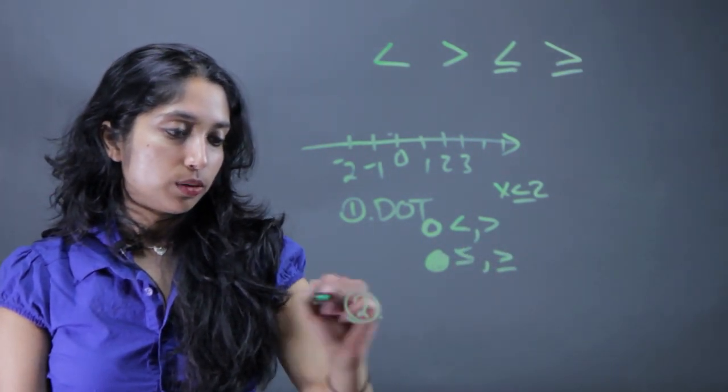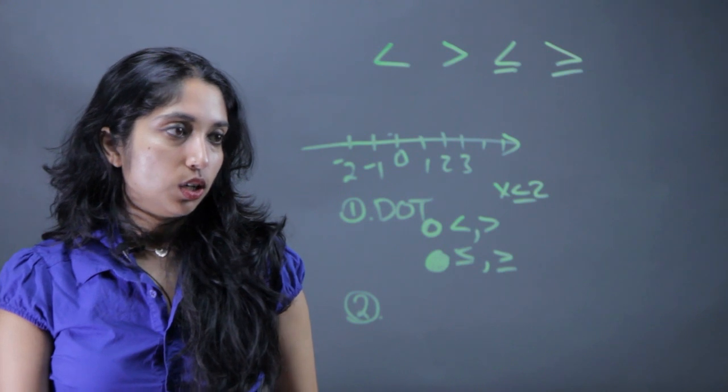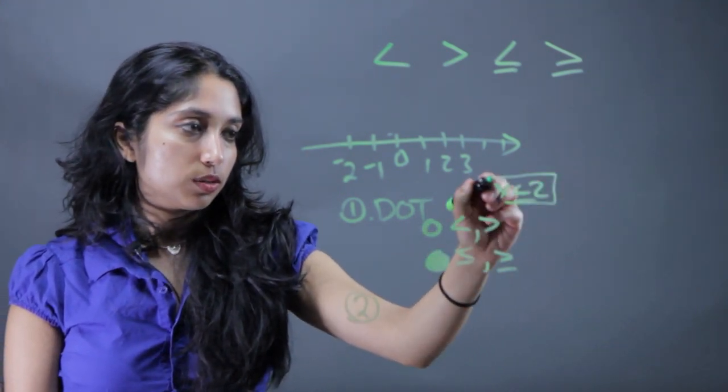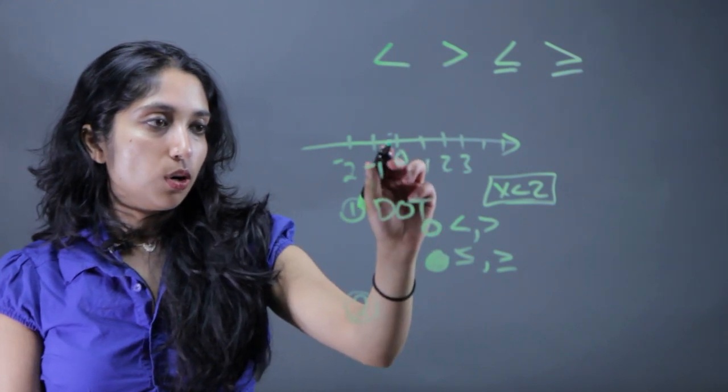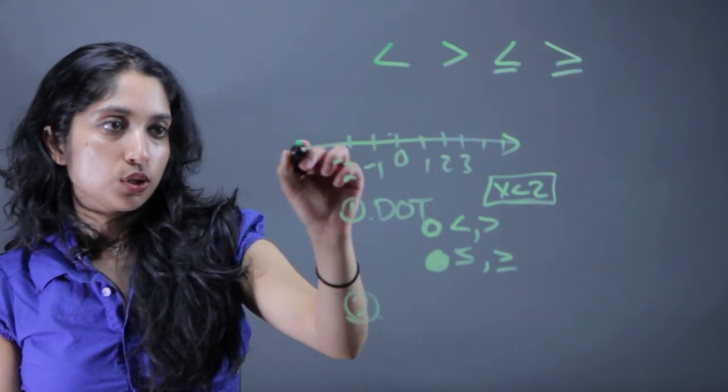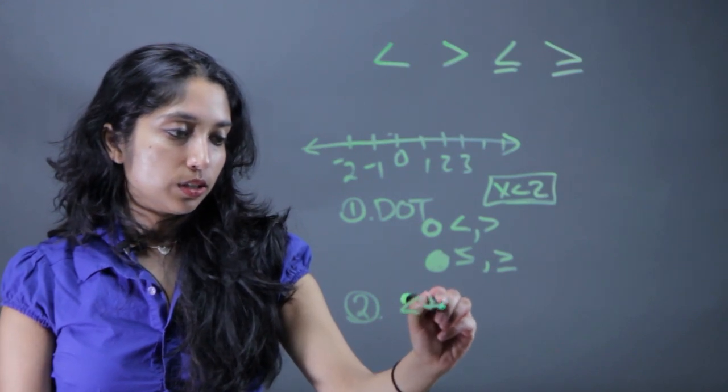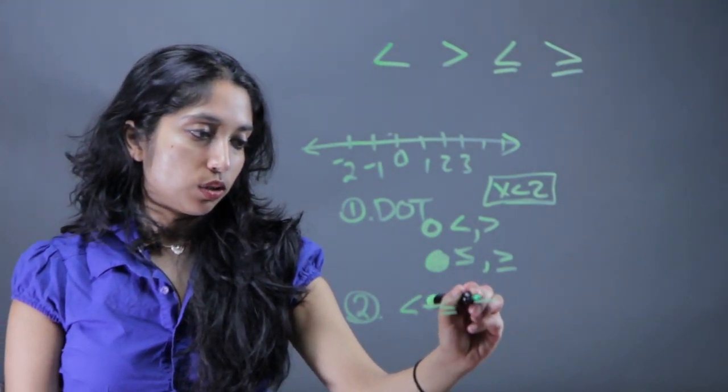The second thing to think about is the direction. If something is less than 2, it's going to be all the values that are less than 2, moving in the leftward direction. So less than and less than or equal to go to the left.